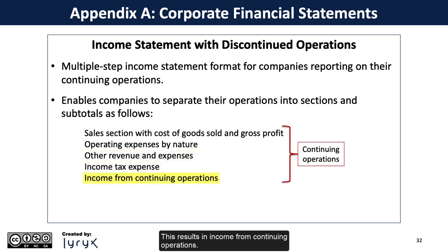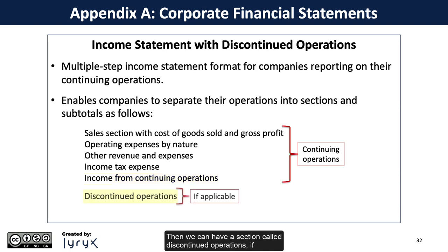This results in income from continuing operations. Then we can have a section called discontinued operations, if applicable, which is then followed by net income.